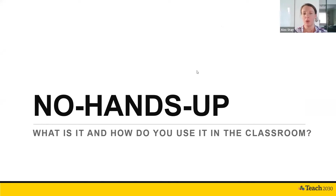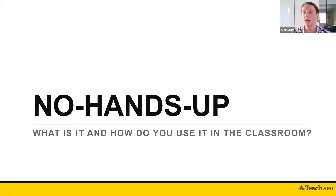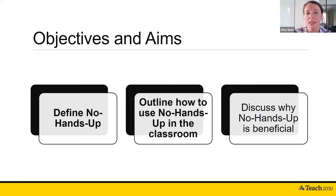Today we are looking at No Hands Up — what it is and how you use it in your classroom. This is a strategy that we cover on our Practical Active Learning course, and we definitely think it's really useful for all of our classrooms. James is a TVET teacher and I am an English teacher, so we will be able to share lots of different experiences. We're going to look at defining No Hands Up, outlining how to use it in the classroom, and then discussing the benefits.